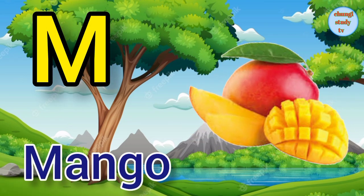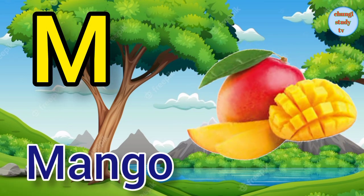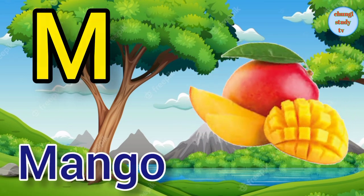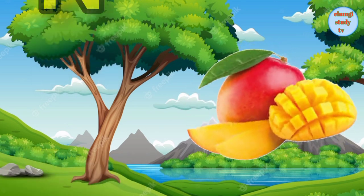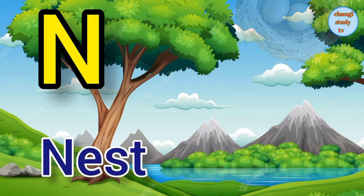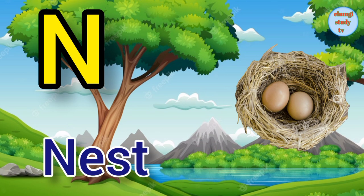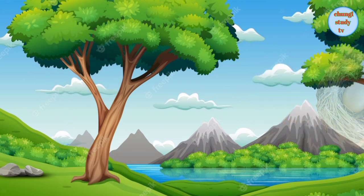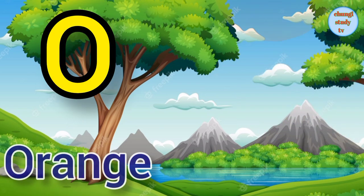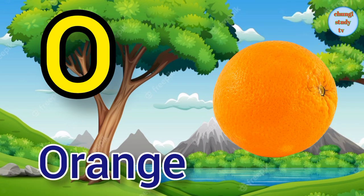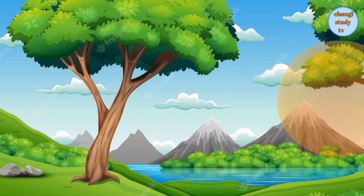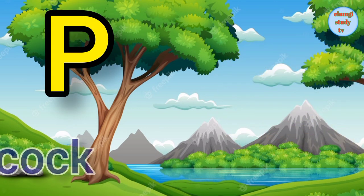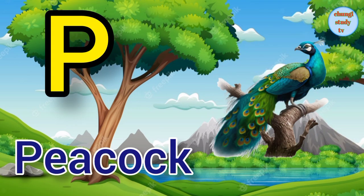M. M for mango, mango means arm. N. N for nest, nest means ghosla. O. O for orange, orange means santara. P. P for peacock, peacock means more.